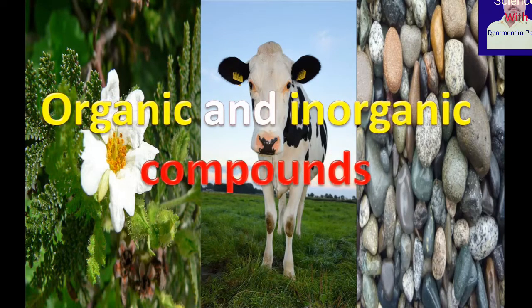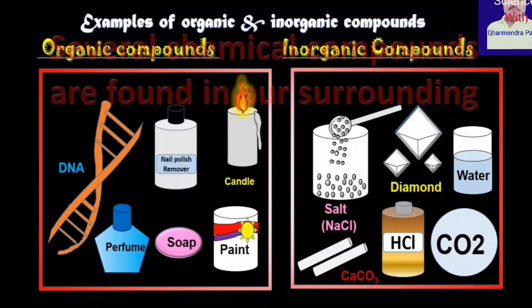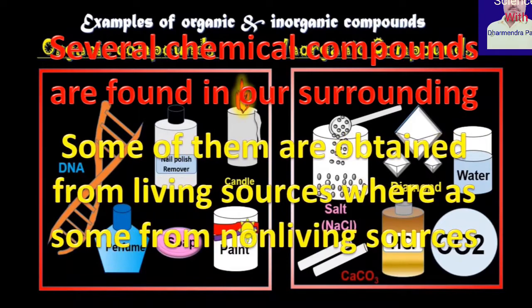Organic and inorganic compounds. Several chemical compounds are found in our surroundings. Some of them are obtained from living sources whereas some from non-living sources.